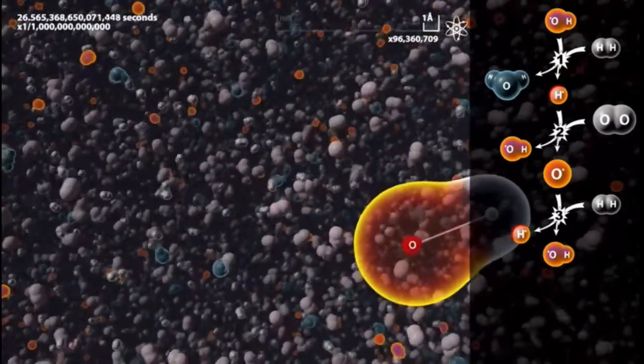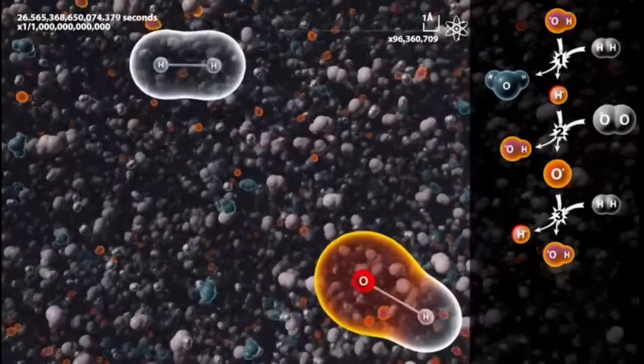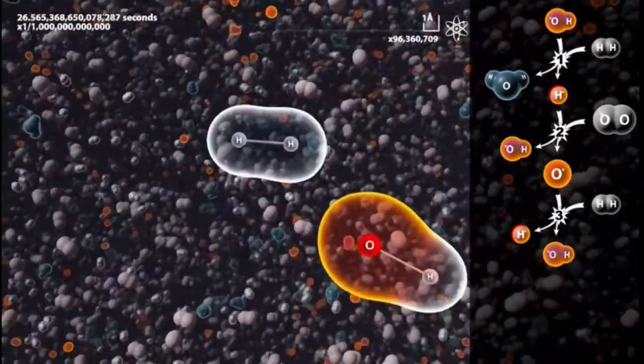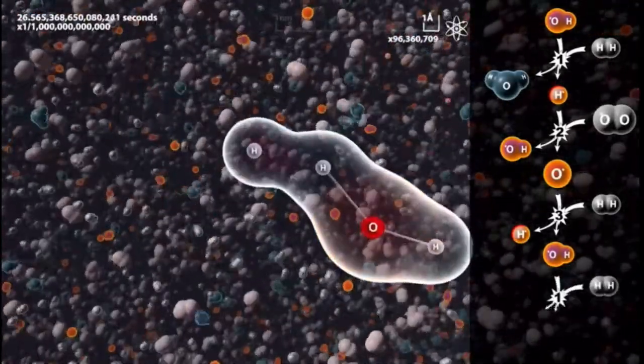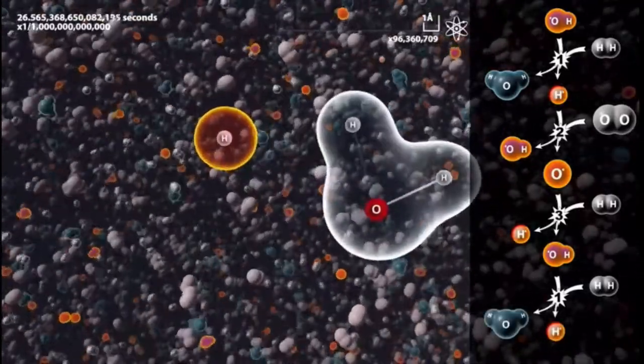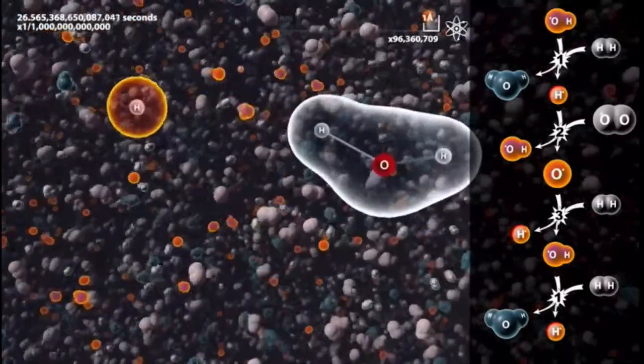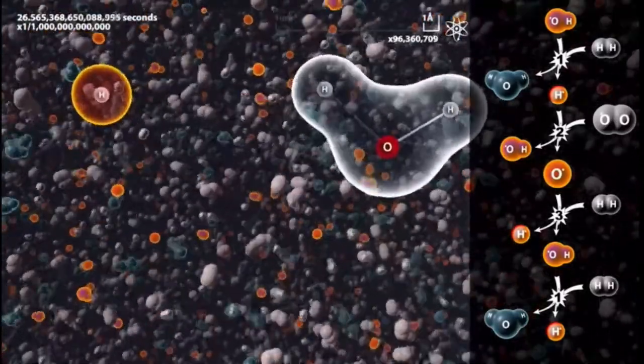At the next stage, the HO radical meets another hydrogen molecule. It takes one of the hydrogen atoms and finally turns into a water molecule. When the process is complete, we end up with another hydrogen atom, just as when we started, meaning that we have come full circle.